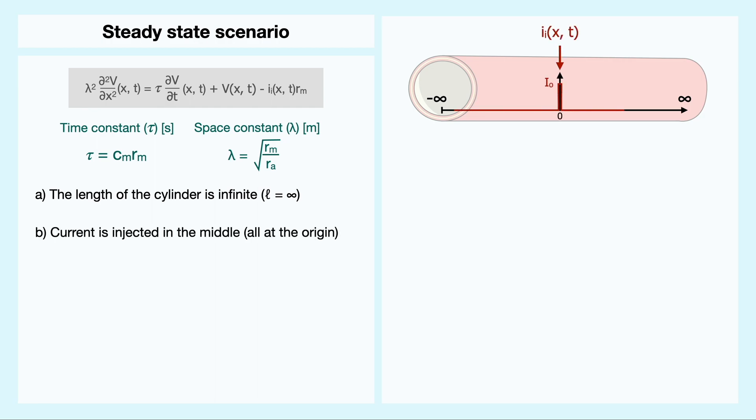Secondly, we assume that we inject current directly in the middle of our cylinder, such that there is only a value of current I0 at the origin and everywhere else other than x equals 0 has a current value of 0. Thirdly, as it says in its name, the steady state scenario disregards time, and assumes a scenario where the rate of change in voltage as a function of time is equal to 0.